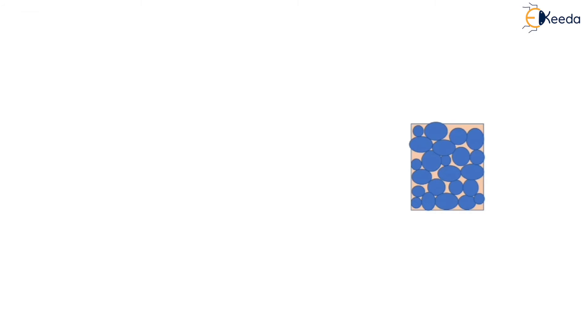As we all know, the soil mass consists of three elements: first is solid particles, second is water, and third is air. In this diagram, the blue dots represent the solid particles, and the space in between the solid particles, represented by orange color, is called void space. This void space is partially filled with water and partially filled with air. When this space is entirely filled with water, the soil mass is considered saturated. When the void space is entirely filled with air and there is no water present, the soil is considered dry soil.